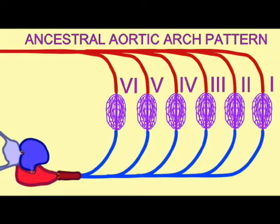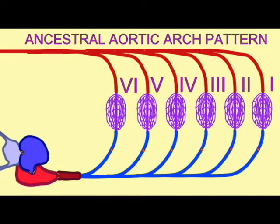The ventral heart sends deoxygenated blood through the ventral aorta into the aortic arches which reach the bronchial bars of the gills and the soft tissue known as lamellae.